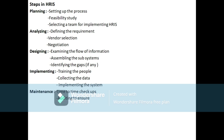Designing means examining the flow of information, assembling the subsystems, and identifying the gaps. Examining the flow of information means designing the HRIS system in such a way that information is passed without any disturbance or disruption. The sequence of information should be designed to enable the HRIS team to work on it effectively — from where to where the information should be communicated and passed.